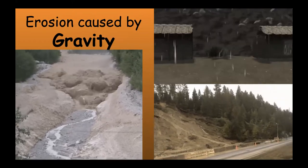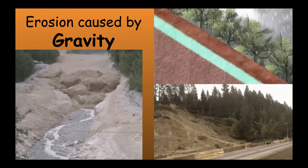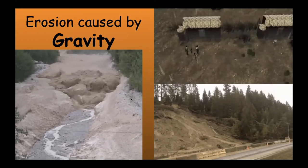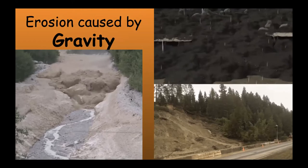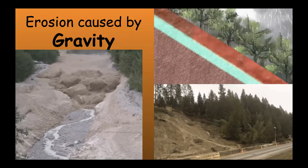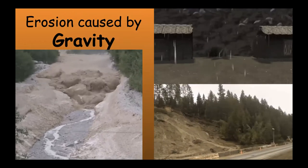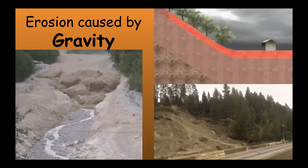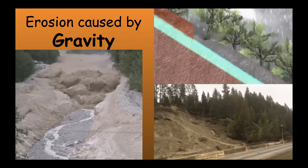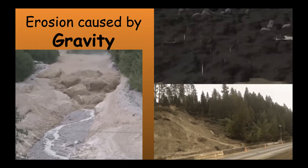Great examples of gravity-caused erosion include mudslides and landslides. Gravity pulls sediment, mud, and soil down a hill. Eventually it stops moving and deposits in a new location. Remember: erosion is the actual movement, and deposition is when sediment stops moving and drops in a new location. We have mudslides and landslides here in Texas, especially with heavy rains and floods.